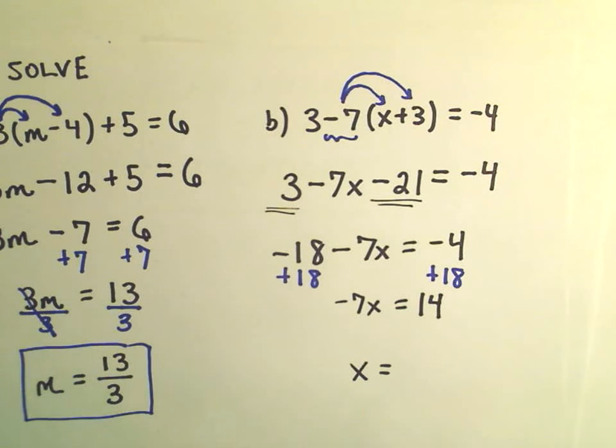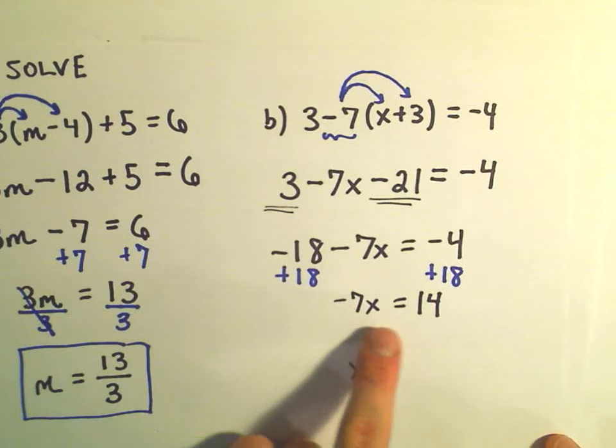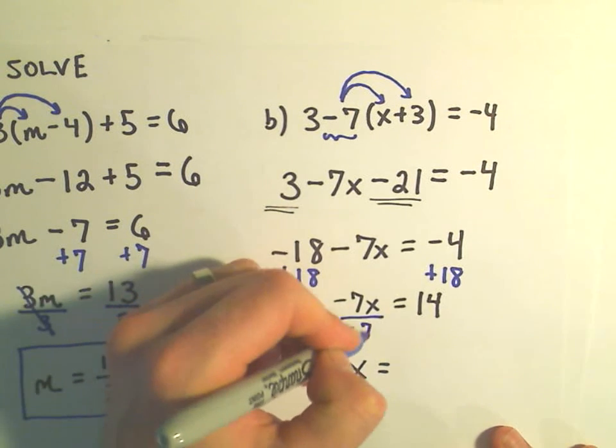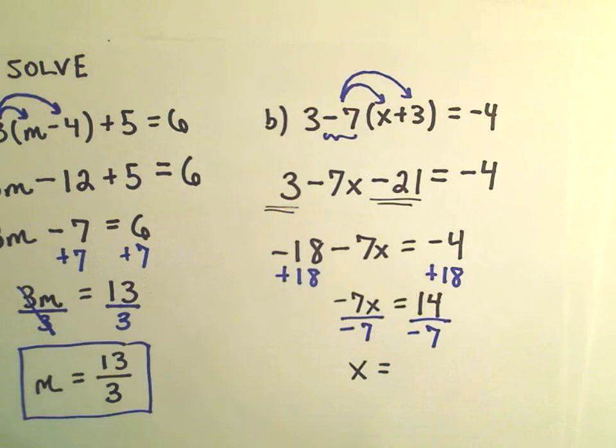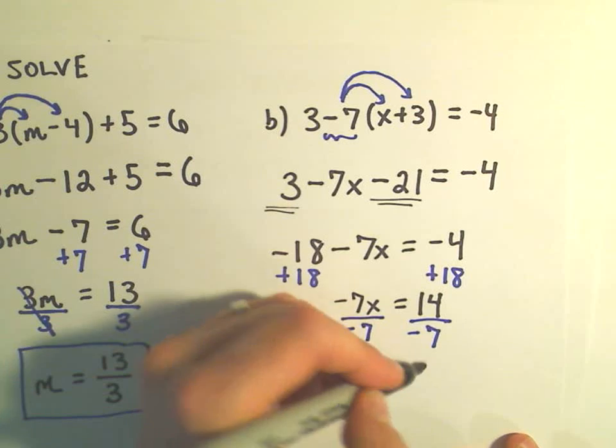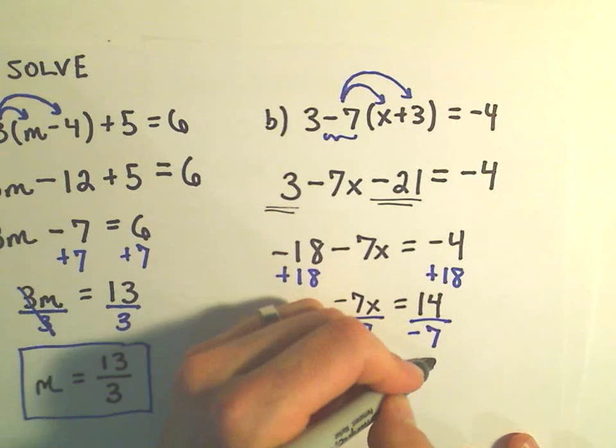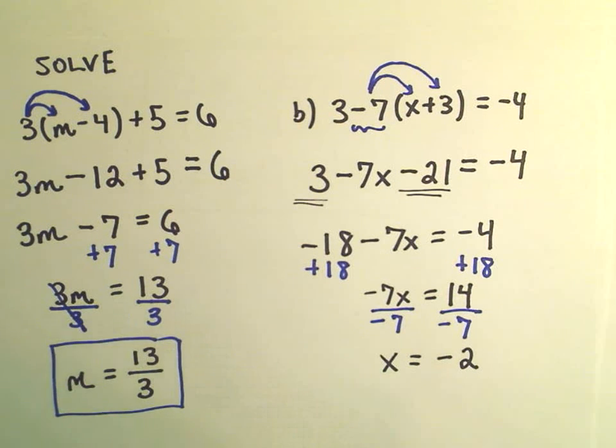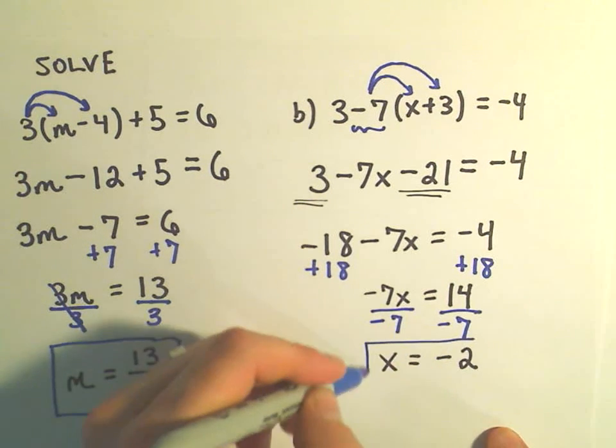And now, since we've got just a single term on the left, a single term on the right, to get rid of the negative 7, I'm simply going to divide both sides by negative 7. And in this case we have a positive divided by a negative, which is a negative. 14 over 7 leaves us with 2. So our final answer in this case is going to be x equals negative 2.